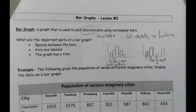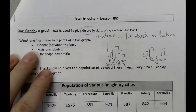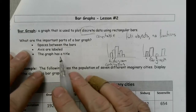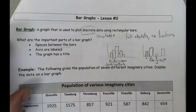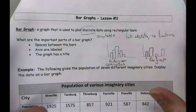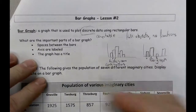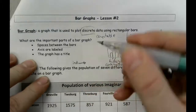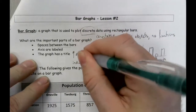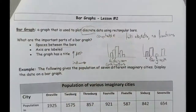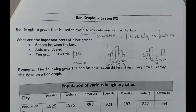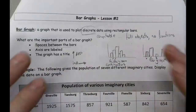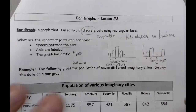Now, something else you need to consider about the graphs: just like with broken line graphs, the axes need to be labeled and the graph needs to have a title. The independent variable is going to be on the horizontal axis, and the dependent variable is going to be on the vertical axis. That setup is going to be the same for every graph we look at.